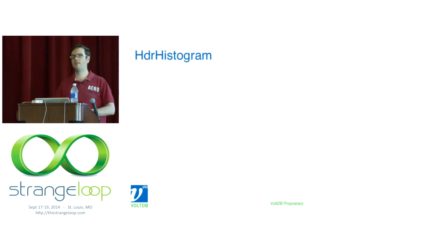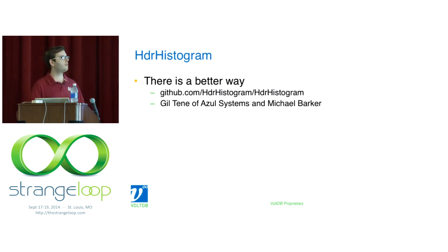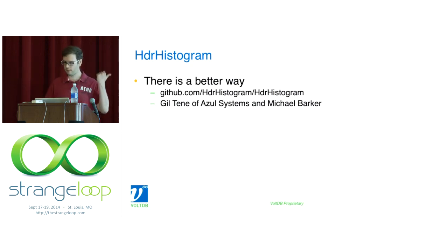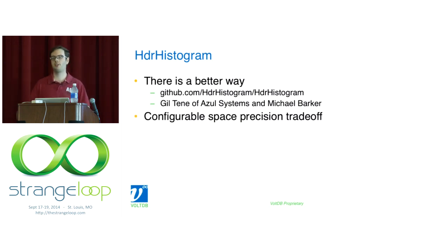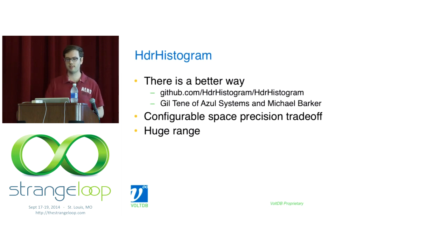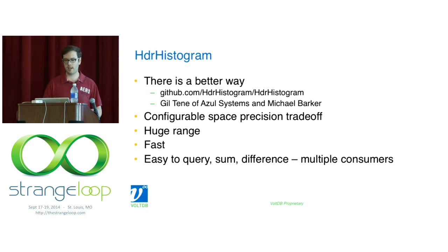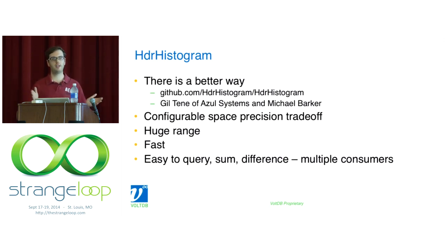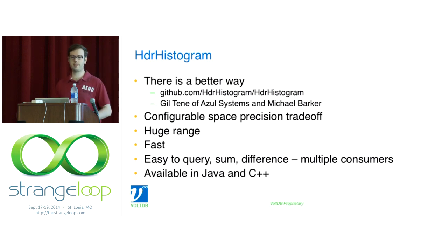A better way to measure long-tail latency is using a histogram — you get a complete picture of what actually occurred. The problem with most naive implementations is fixed-range buckets: not very space-efficient and not very accurate. Gil Tene and Michael Barker created an open-source histogram implementation with a configurable space-precision tradeoff. You can express microseconds to days in low hundreds of kilobytes with three digits of precision, or tens of kilobytes if you give up significant digits. It's extremely fast, easy to query differences across multiple consumers, and available in Java and C++.